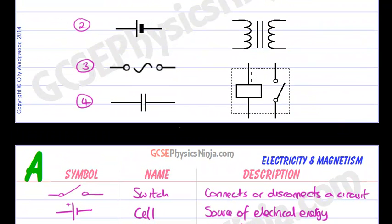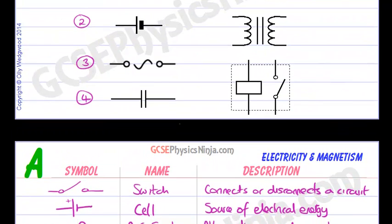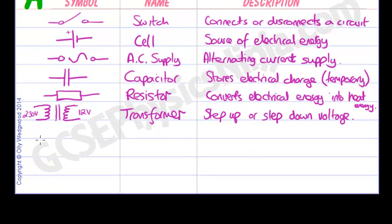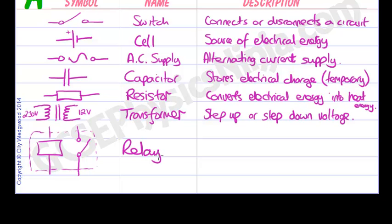And finally we have this strange box with a switch type of thing in it. And the whole thing is encased in a kind of dotted line. And this component is called a relay. And it is a type of an electrical switch, electrically operated switch.